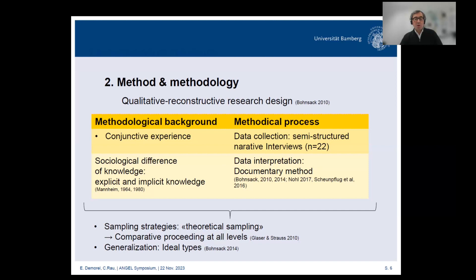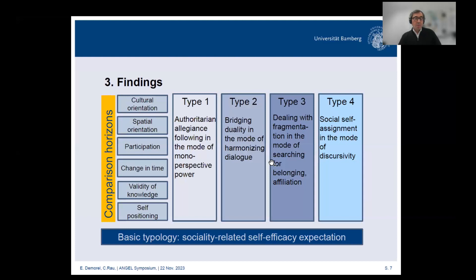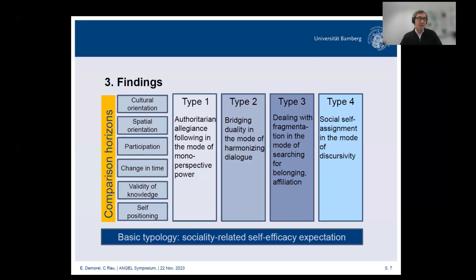The data was collected through 22 semi-structured narrative interviews using theoretical sampling. Interviews were analyzed comparatively, allowing explication of implicit or tacit knowledge of participants and enabling typification of findings beyond individual cases. Commonalities and contrasts are the fundamental principle of generating individual types, confirmed through systematic comparisons. For validation, interpretations were controlled within an interpretation group experienced with the method. We were able to reconstruct six different comparative horizons: cultural orientation, spatial orientation, participation, change in time, validity of knowledge, and self-positioning. The condensation of results led to a basic typology around sociality-related self-efficacy expectation, with four types.